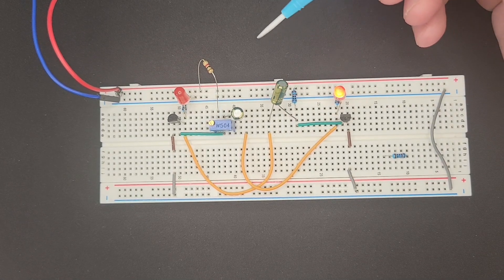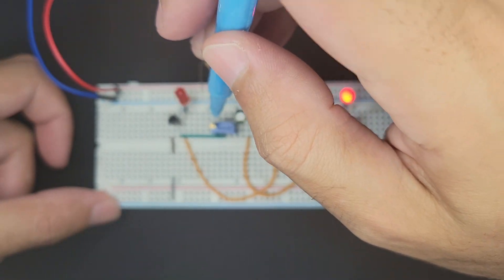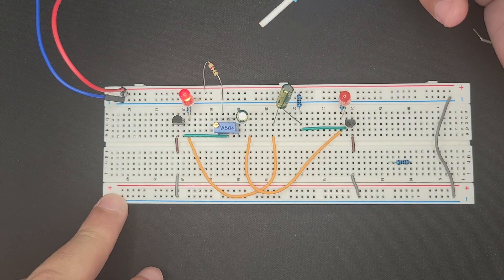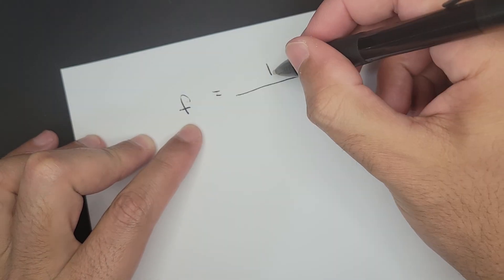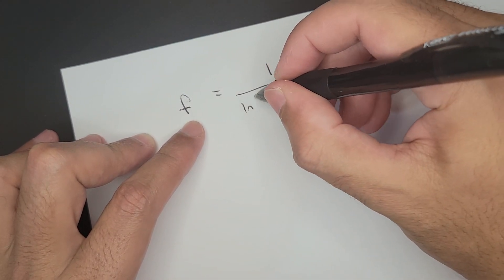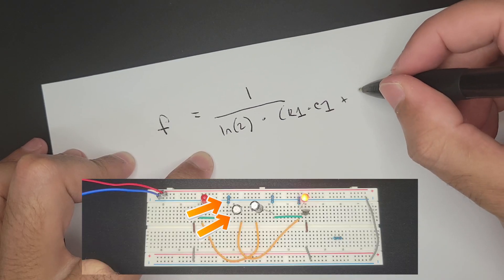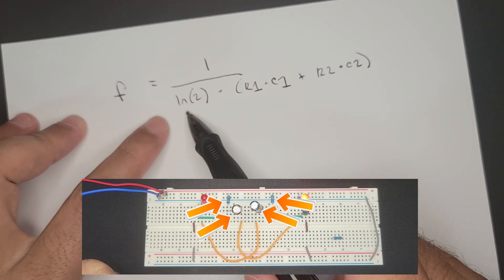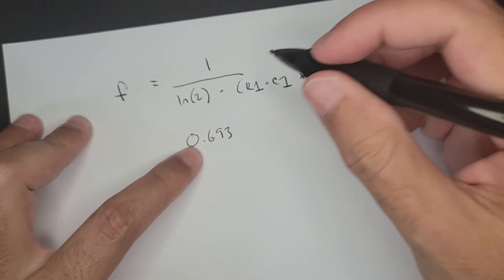We've had our astable multivibrator for a while. We added a potentiometer so we can change the frequency on the fly. We can slow it way down and see the blinking slow down. What I want to be able to do is plan for a specific frequency. I looked up a formula and it seems to be frequency, which is in hertz, equals the inverse of ln(2) times R1×C1 plus R2×C2. This means the natural logarithm of two, which simplifies to 0.693.